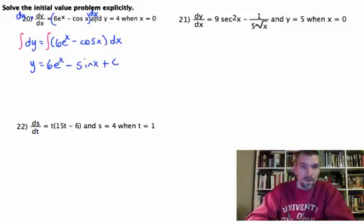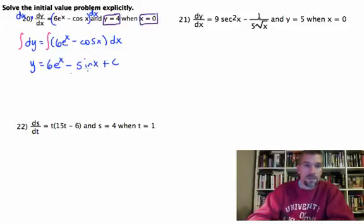But wait, there's more. When you act now, you can substitute 4 for y and 0 for x. So what that's going to give us then is 4 equals 6e to the 0 minus sine 0 plus c.